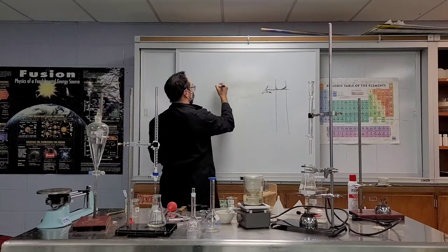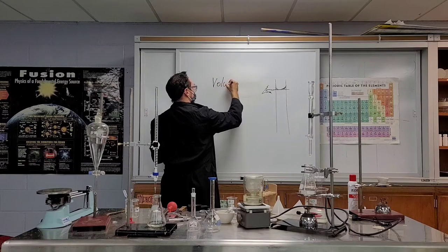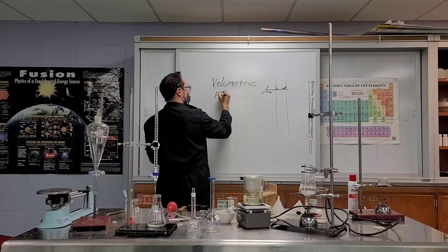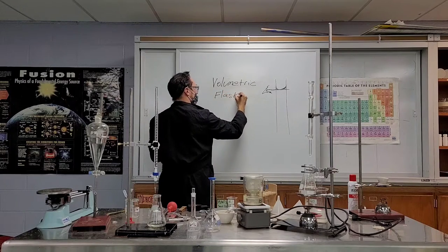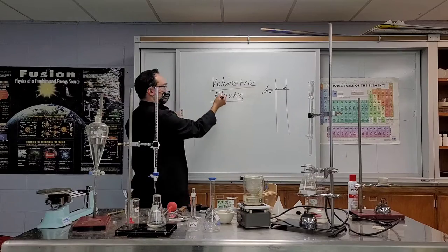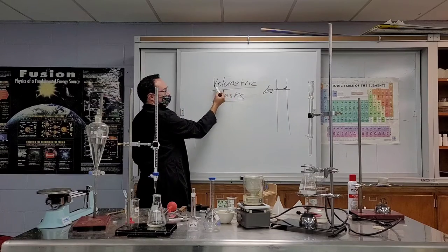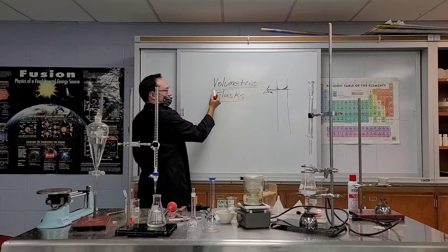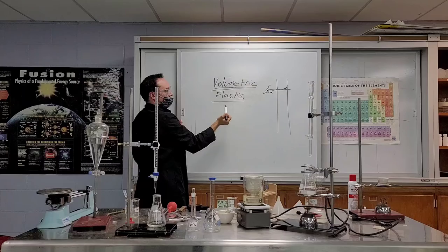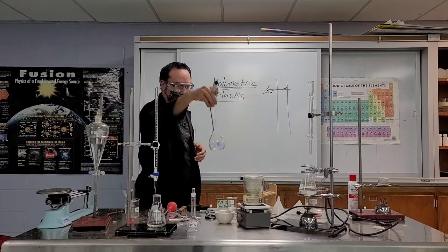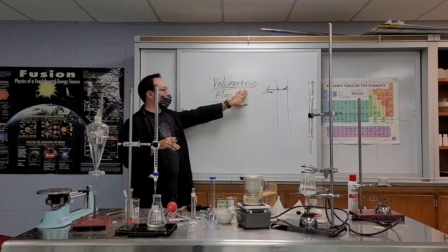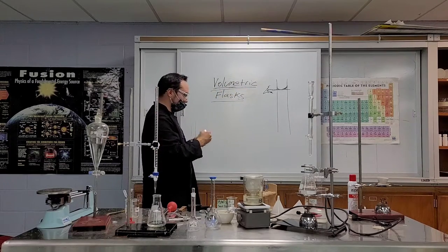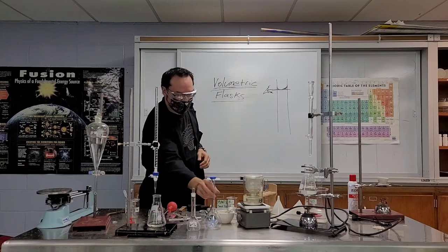They are called volumetric flasks. Take a wild guess why they're called volumetric. Metric means to measure and the amount of space something takes up is volume, so these are flasks that accurately measure a certain volume. I'll bring one close to the video so you can see it.